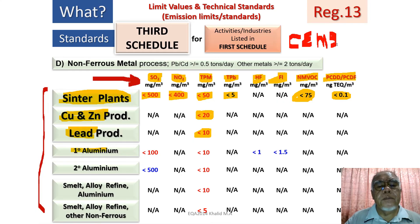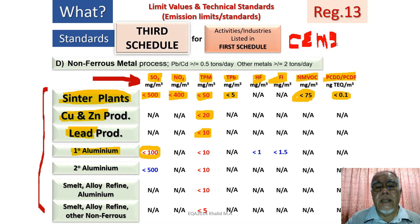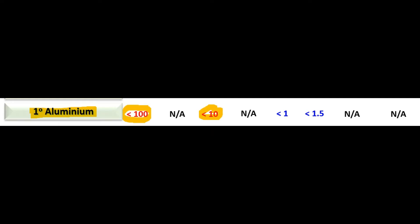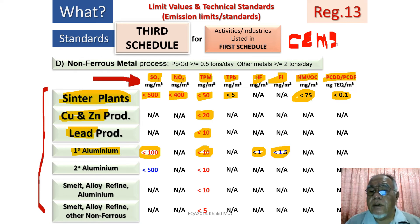For primary aluminium from aluminium ingots, two parameters require CEMS: sulfur dioxide and total particulate matter. Two other parameters require manual periodic sampling — hydrofluoric acid fumes and fluorine.